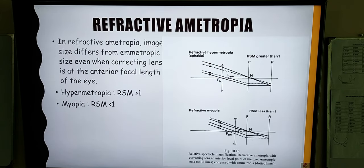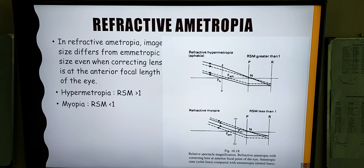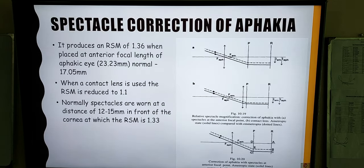Moving on to refractive ametropia — the image size will differ. For hypermetropia corrected by a convex lens, the image will be magnified and the RSM will be greater than 1. In refractive myopia, with the use of a concave lens which has a diminishing effect, the RSM will be less than 1 and the retinal image size will be less than that of the emmetropic eye.